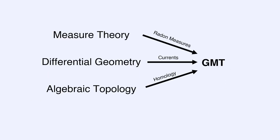So in essence, geometric measure theory is a mix of three subjects. It really brings in three major constructions. For measure theory, if you mix Radon measures together with currents from differential geometry, together with homology theory from algebraic topology, you essentially get geometric measure theory. There's another subject called geometric analysis that uses all three of these subjects quite intensively, but with GMT we're specifically mixing these three constructions — Radon measures, currents, and homology. You're not supposed to know anything about any of these; you'll learn about them throughout this session.